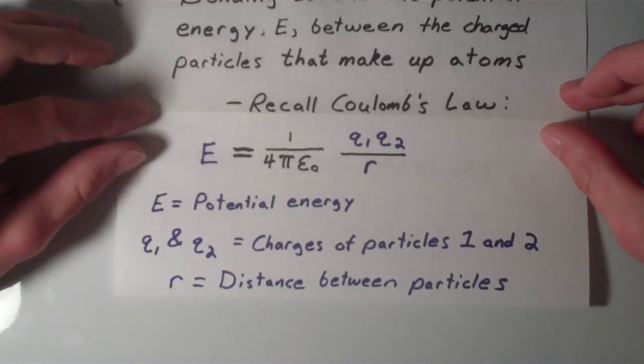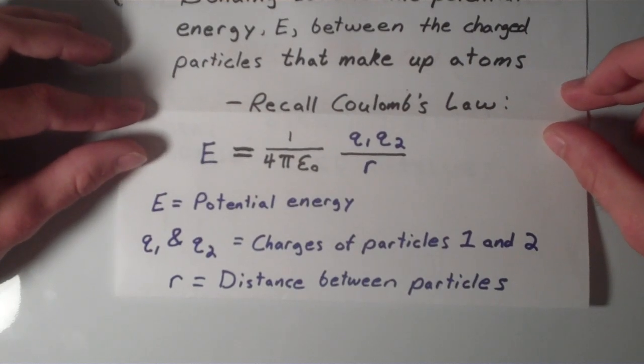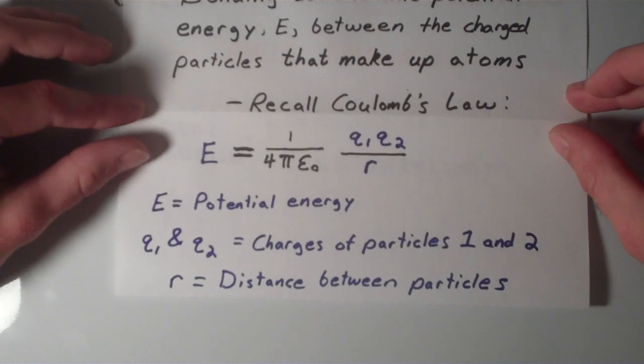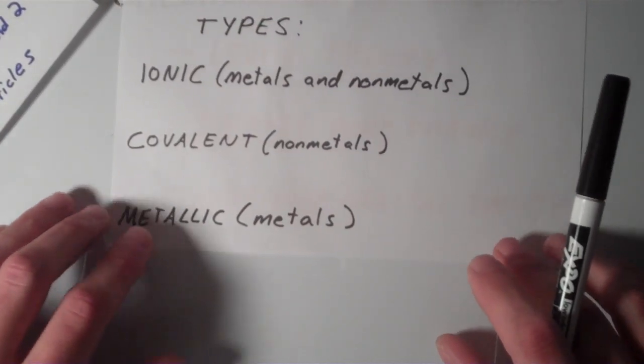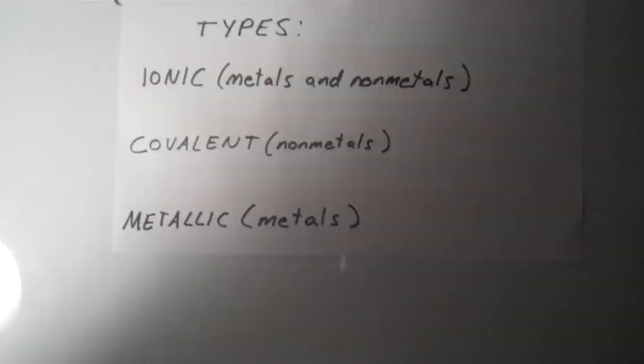So basically, these Coulomb attractions can basically manifest themselves in three different ways. And those three different ways basically represent the different kinds of bonding that we've learned about. So, these are ionic, covalent, and metallic bonding.